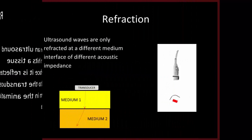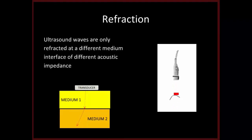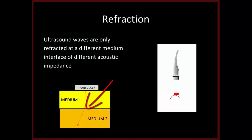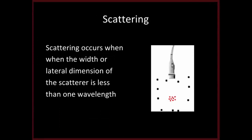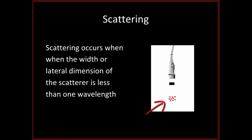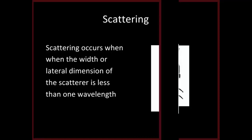Refraction occurs when the ultrasound beam changes direction as it crosses the interface into a medium with a different acoustic impedance — based upon the principle of Snell's law. Scattering is a phenomenon that occurs when the lateral dimension of the scatterer is less than one wavelength. Scattering is actually really useful in ultrasound because it results in the formation of ultrasound images.